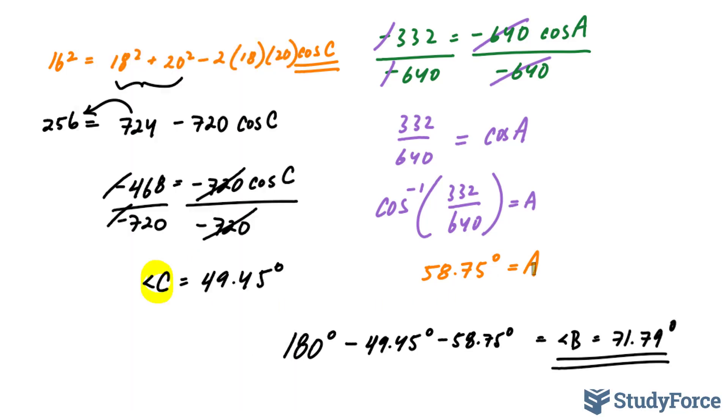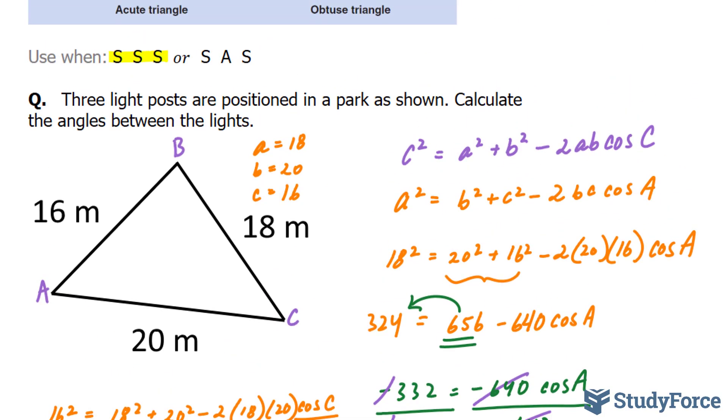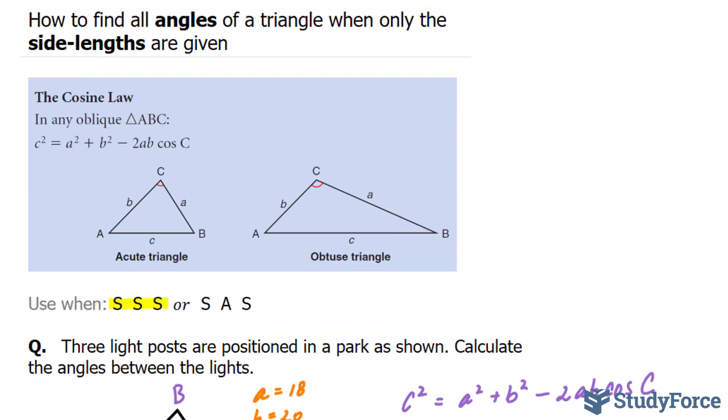This angle, and this angle, and this one represent your solutions for this question. And there you have it. That is how to find all angles of a triangle when only the side lengths are provided.